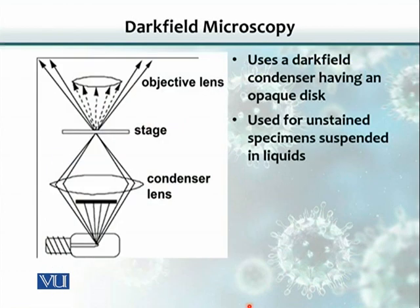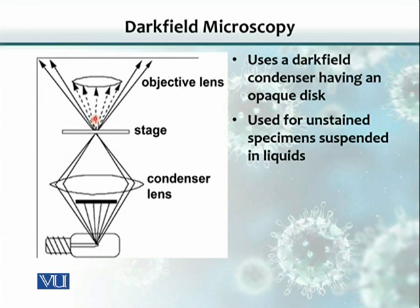In dark field microscopy, it is a variation of the light microscope where the light source is used with a different condenser. It's a special condenser that bends the light and throws the light through the specimen in a way that, if there is no specimen, the light would not pass into the objective. When the specimen contains the organism, the organism would bend the light, and that bent light would enter into the objective lens.